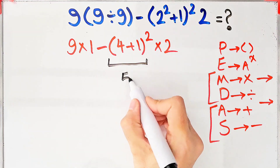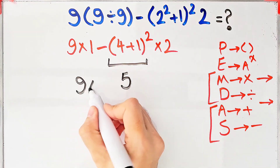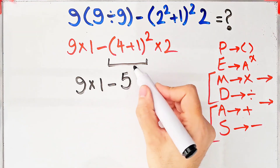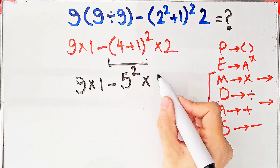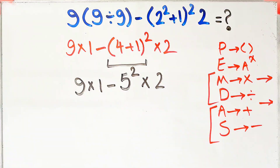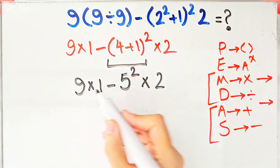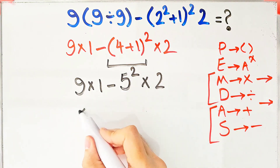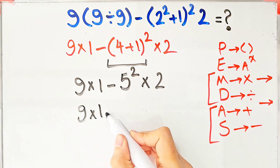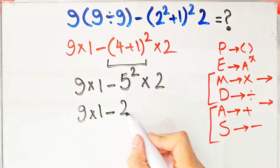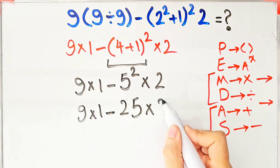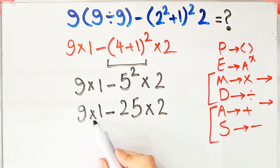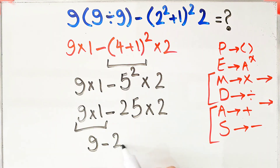Now we have nine times one, then minus five to the power of two, then times two. We have multiplication, subtraction, and exponent. First we simplify the exponent: nine times one, then minus twenty-five, then times two. Nine times one equals nine.